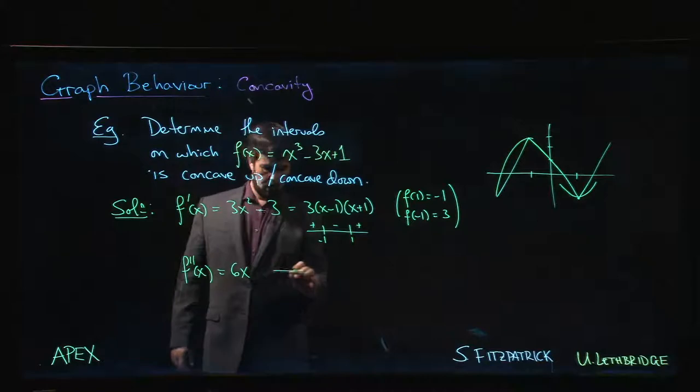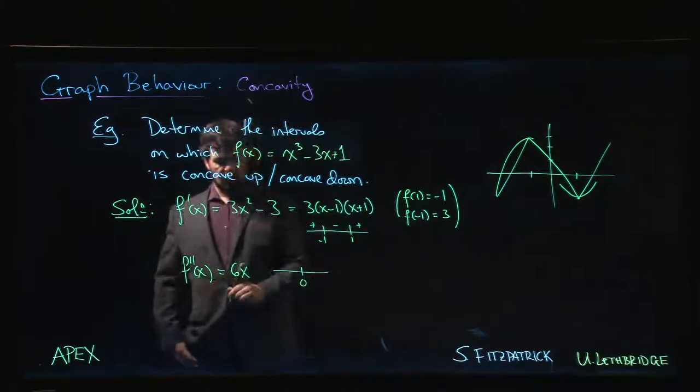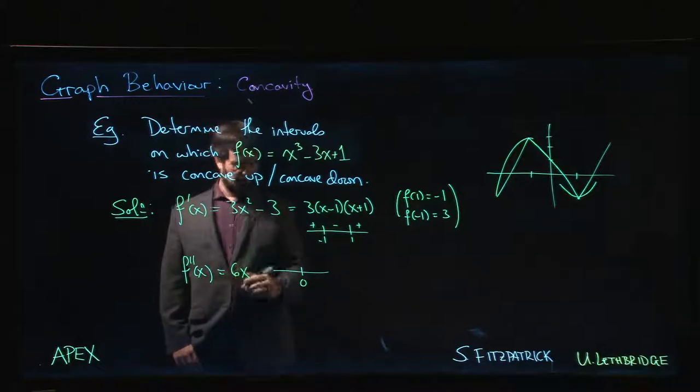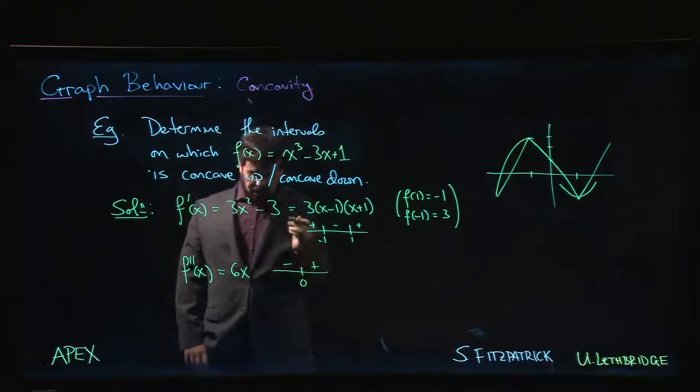So if we were going to draw a sign chart, well, the second derivative is 0 when x is 0. It's positive to the left, it's negative to the right.